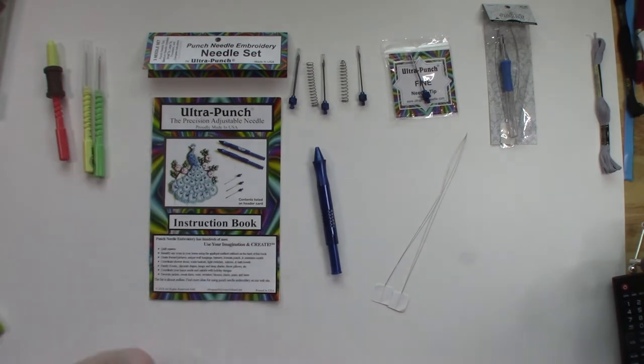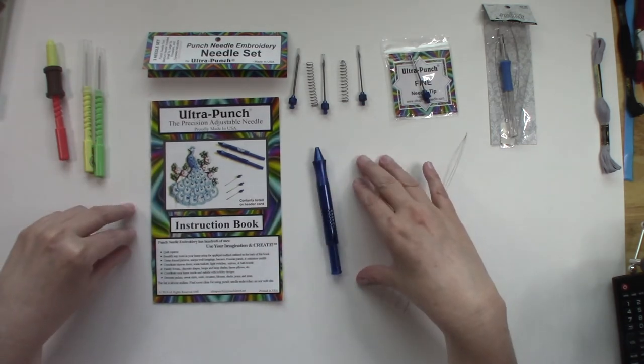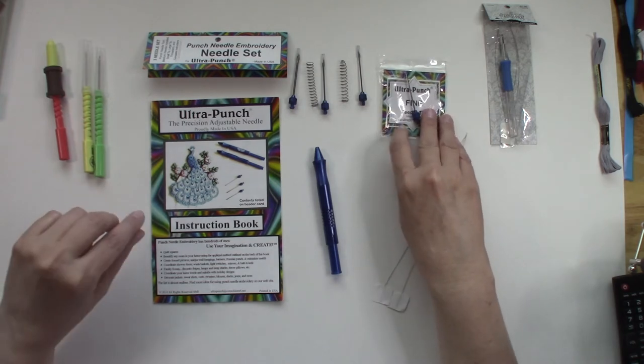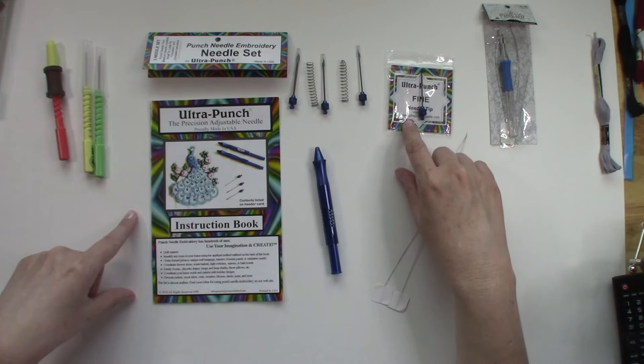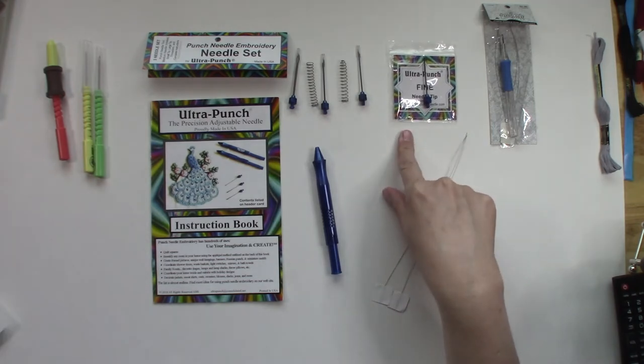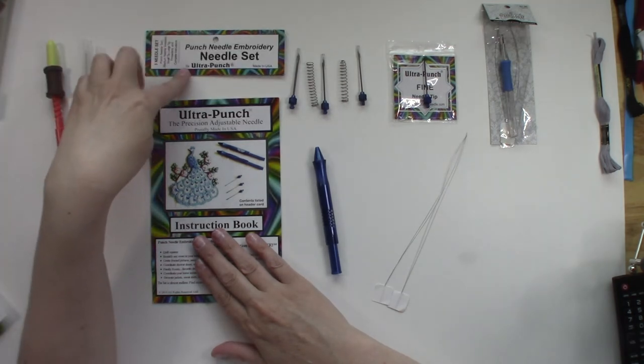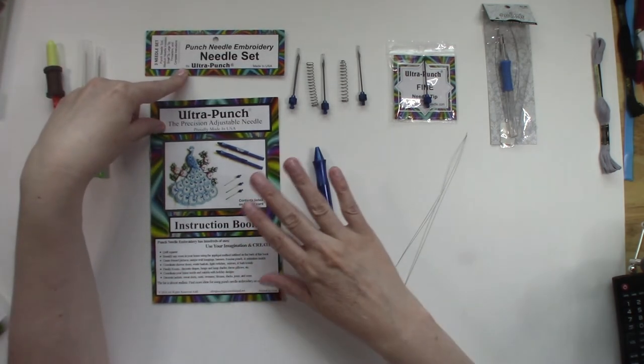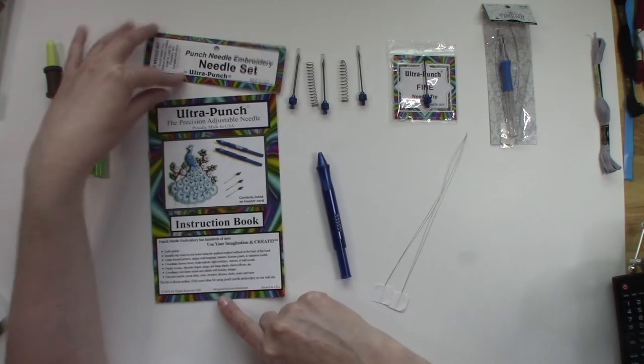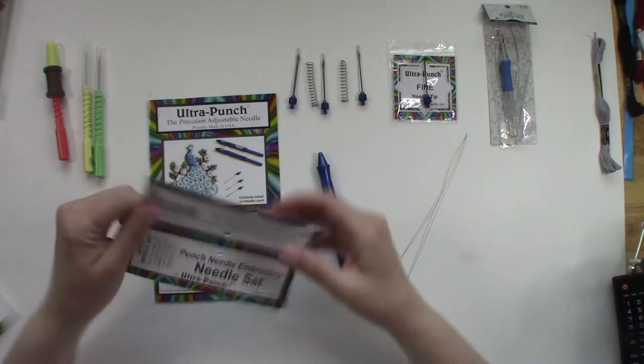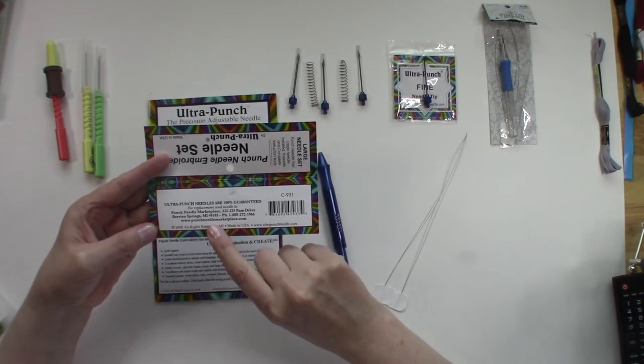I paid $21 for my set, then I did buy an extra needle and the extra needle was $4.29. You can also go to the actual website that this set is from, the name brand website. It's ultrapunchneedle.com and you can also go to that site for replacement needles or you can write to them.